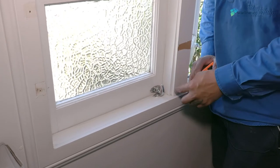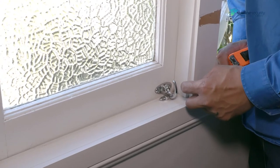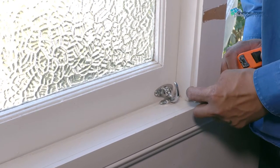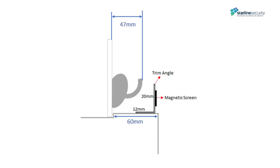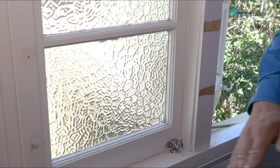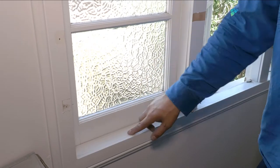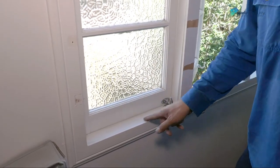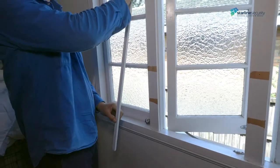First, you need to check the casement sash handles and catches to see how far they project, and then measure the jamb or reveals to see how you're going to install your screen. This window's Coxburg bottom catch sticks out 47mm in the closed position. The magnetic screen needs to have clearance from this handle. In this case, we don't have much room to install and we need to find a solution.